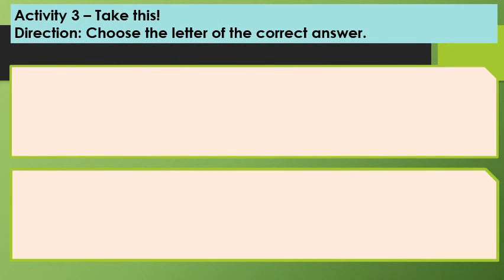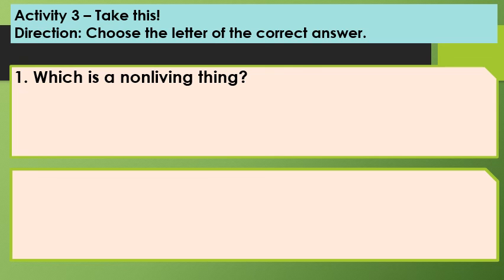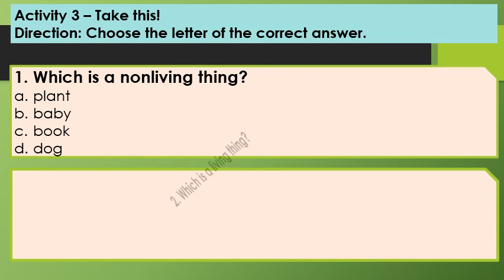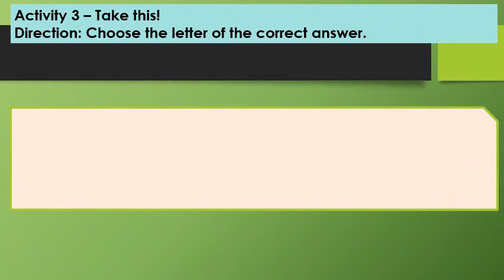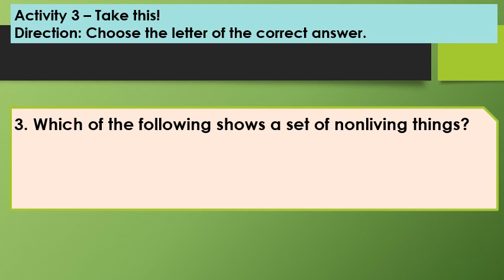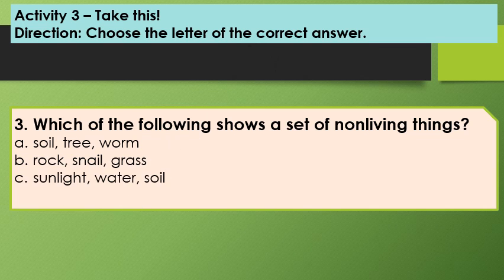Activity three: Take this. Choose the letter of the correct answer. Number one: Which is a non-living thing? A. Plant, B. Baby, C. Book, D. Dog. Number two: Which is a living thing? A. Toy car, B. Cat, C. Baby doll, D. Book. Number three: Which of the following shows a set of non-living things? A. Soil, tree, worm; B. Rock, snail, grass; C. Sunlight, water, soil; D. Snail, water, soil.